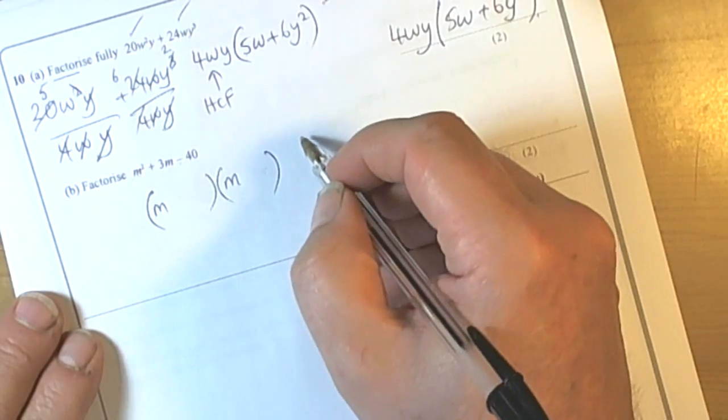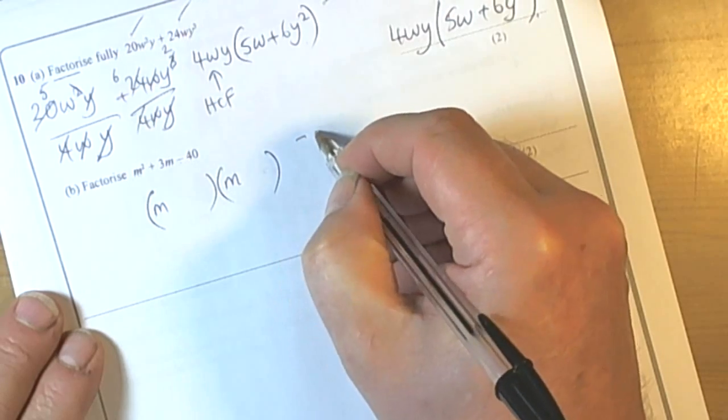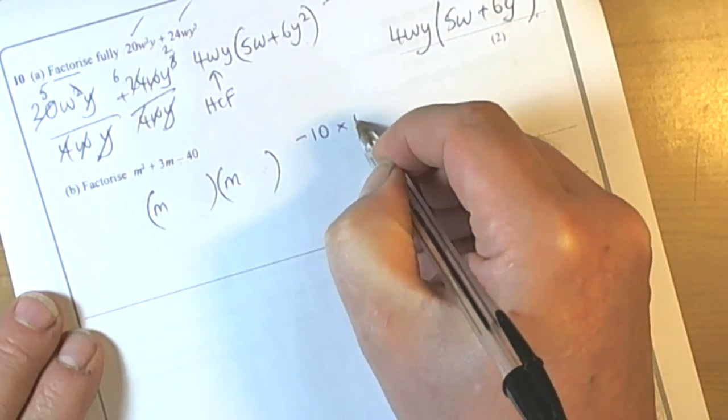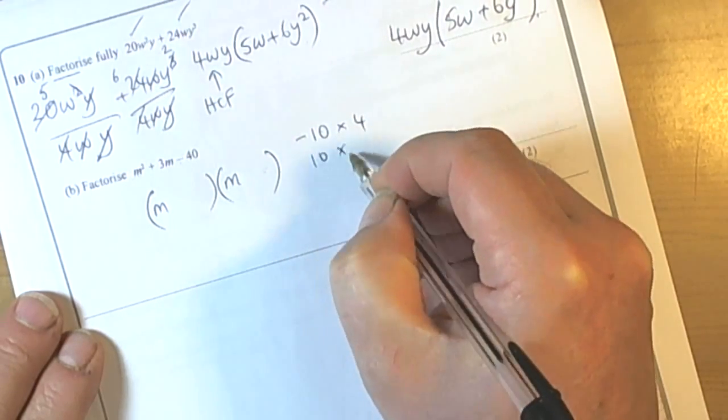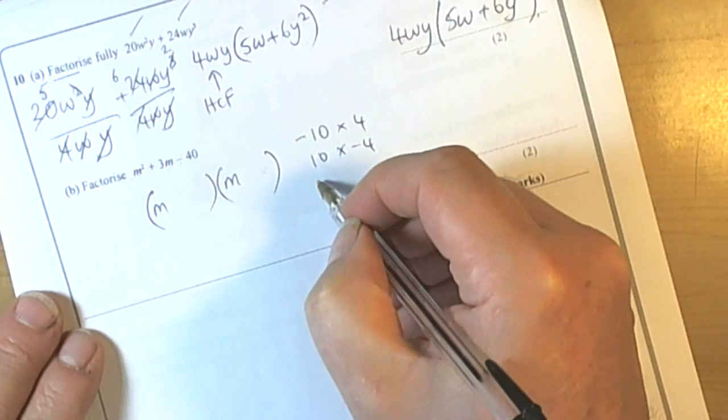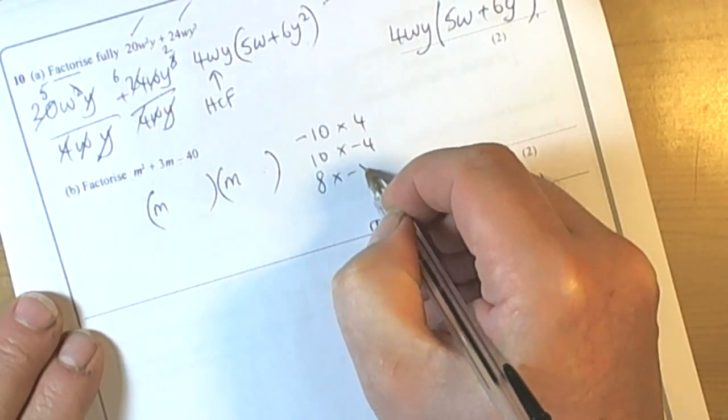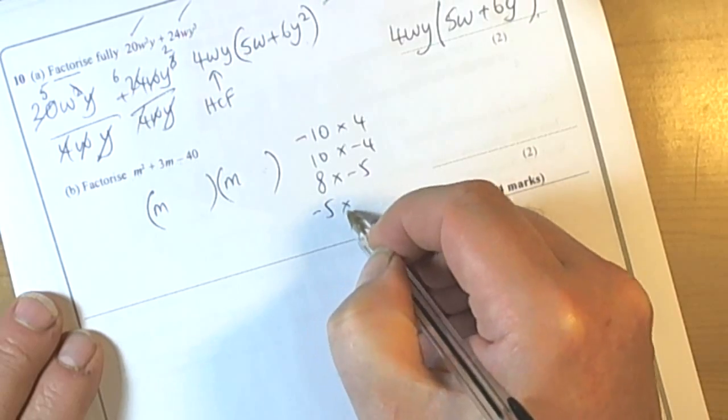So we're looking for two numbers that multiply to give us negative 40. So negative 10 times 4, 10 times negative 4, 8 times negative 5, negative 5 times 8...